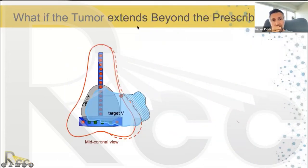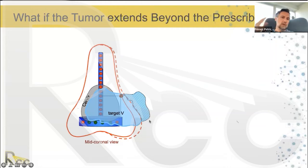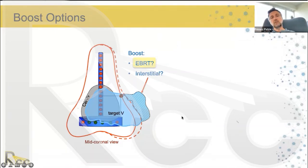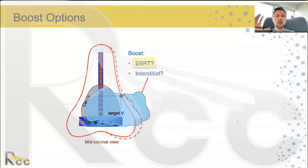When tumors extend beyond 35 mm from center and cannot be covered without burning the vagina, we need other methods. Pulling and dropping the isodose may look good on screen but creates unacceptably high doses in the vagina causing severe morbidity. Options include external beam boost or interstitial brachytherapy boost. External beam boost is widely used but has limitations — dose to organs at risk is higher than desired, and target dose is lower than expected, as demonstrated in dosimetric studies.